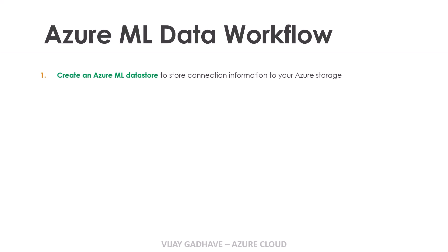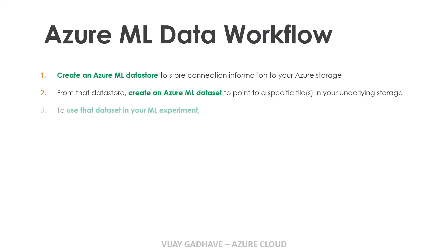In Azure Machine Learning, first we have to create the data store. The data store stores the connection information of the Azure storage. After creating the Azure Machine Learning data store, we have to create the Azure Machine Learning data set and point it to a specific file in our underlying storage. Now we can use this data set in our machine learning experiment.